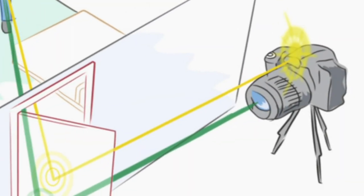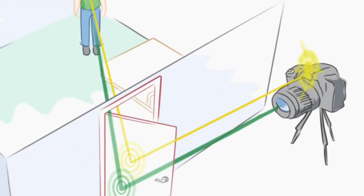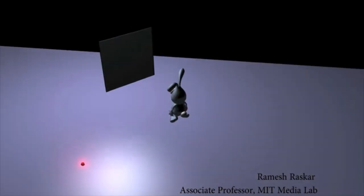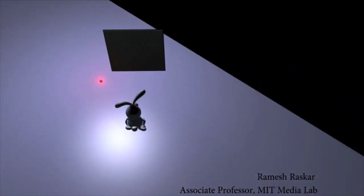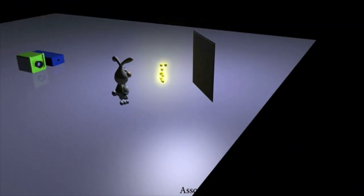We have built a camera that can take pictures around a corner. With an ultra fast flash and high-speed camera and new computational methods, our system can analyze scattered and reflected light.